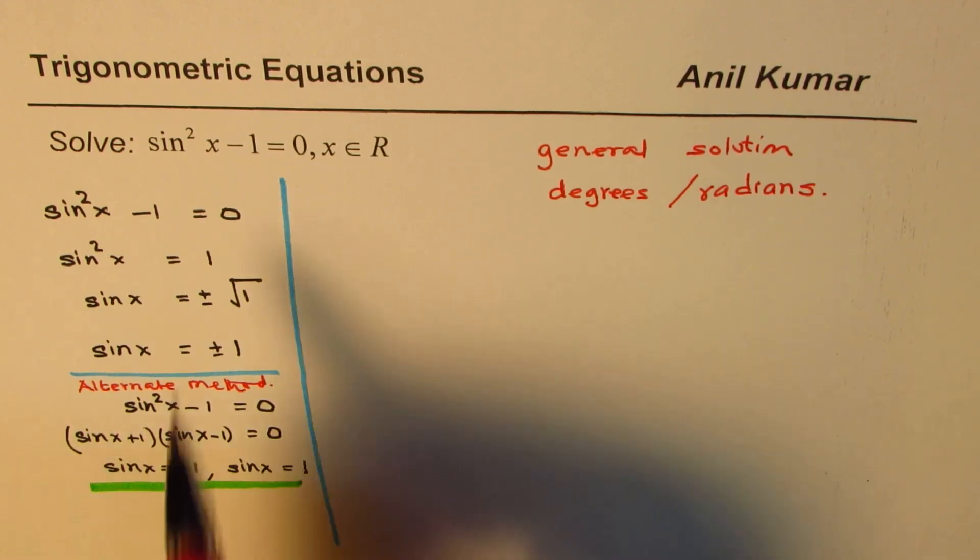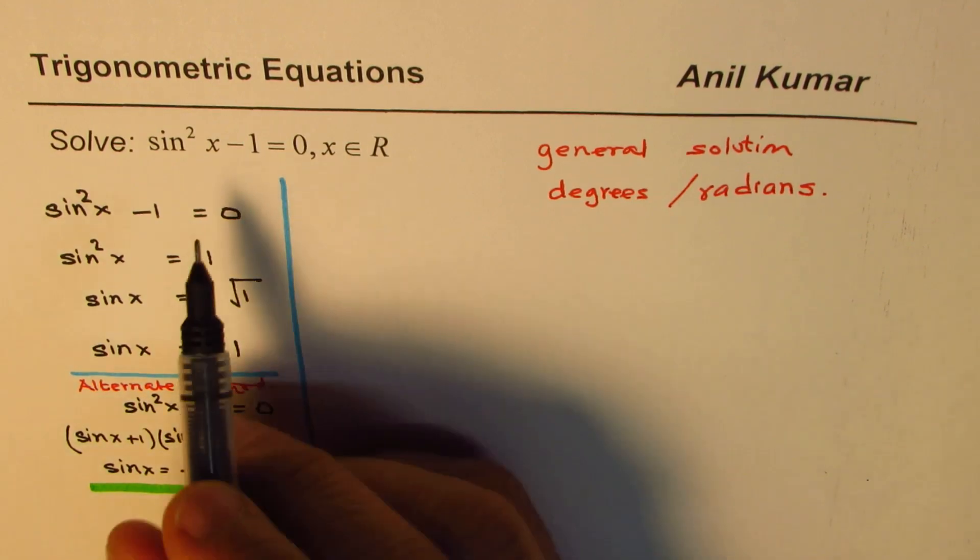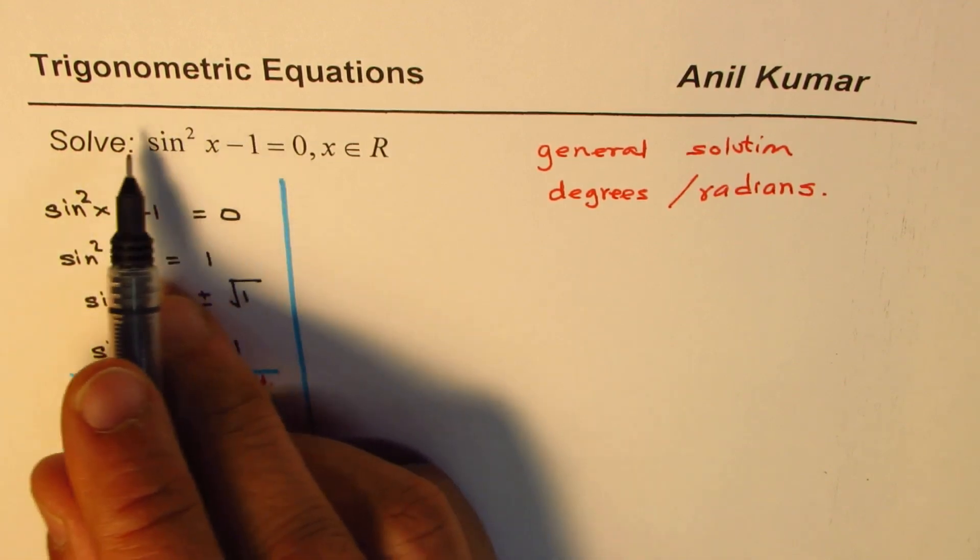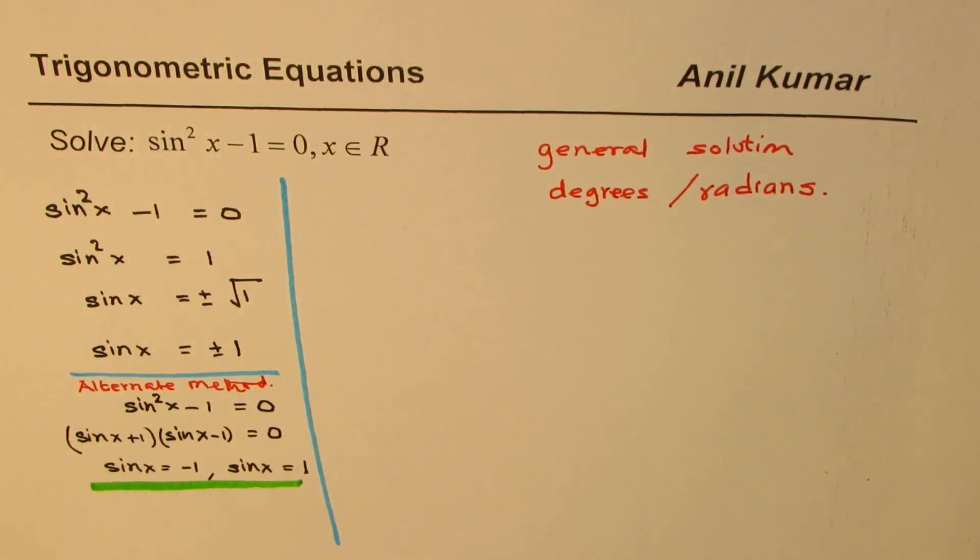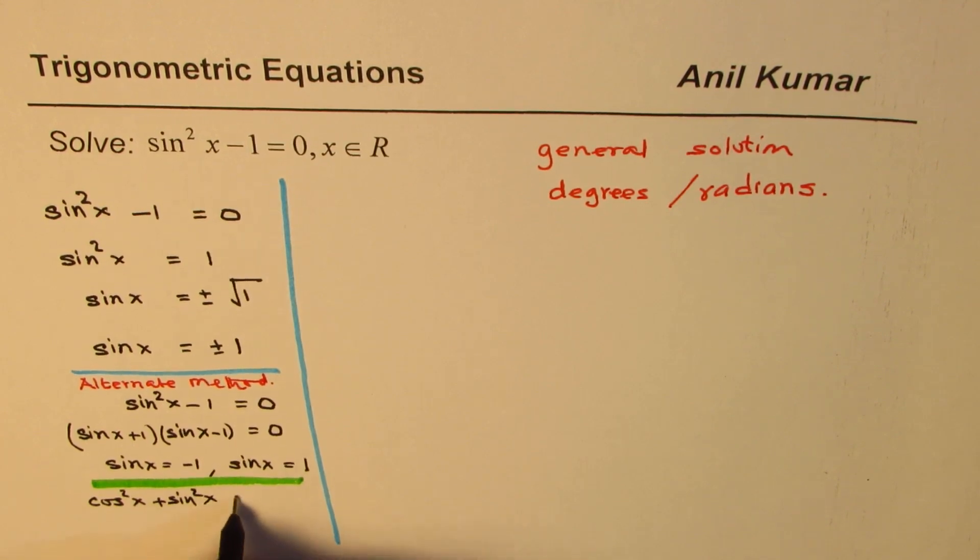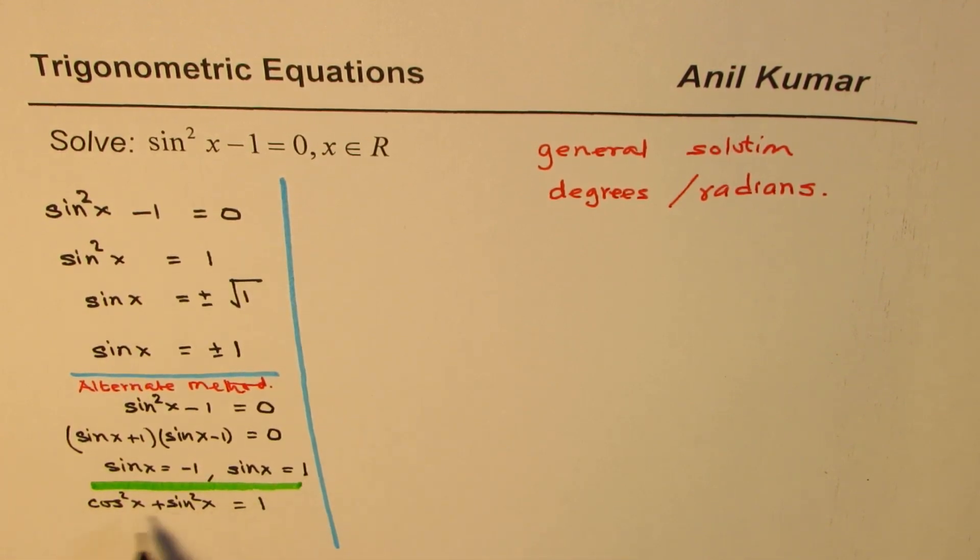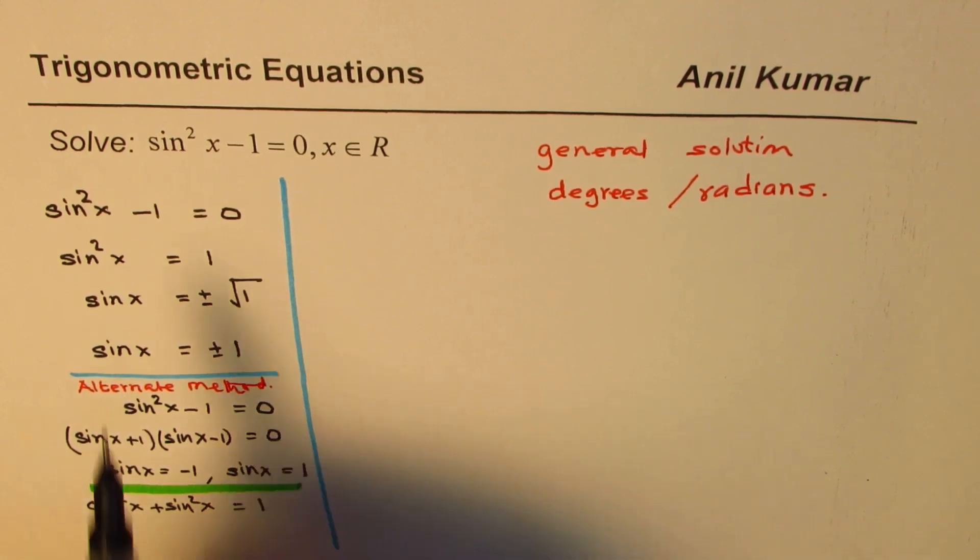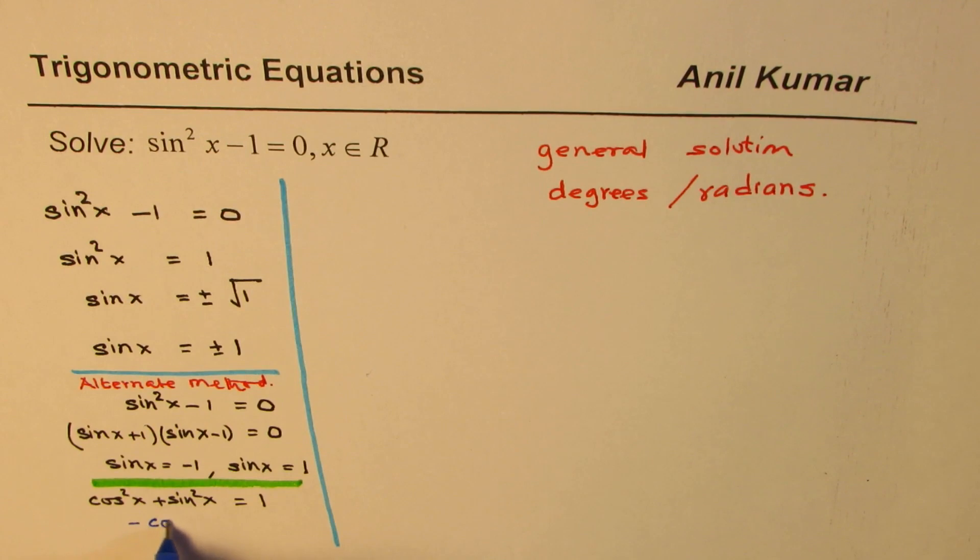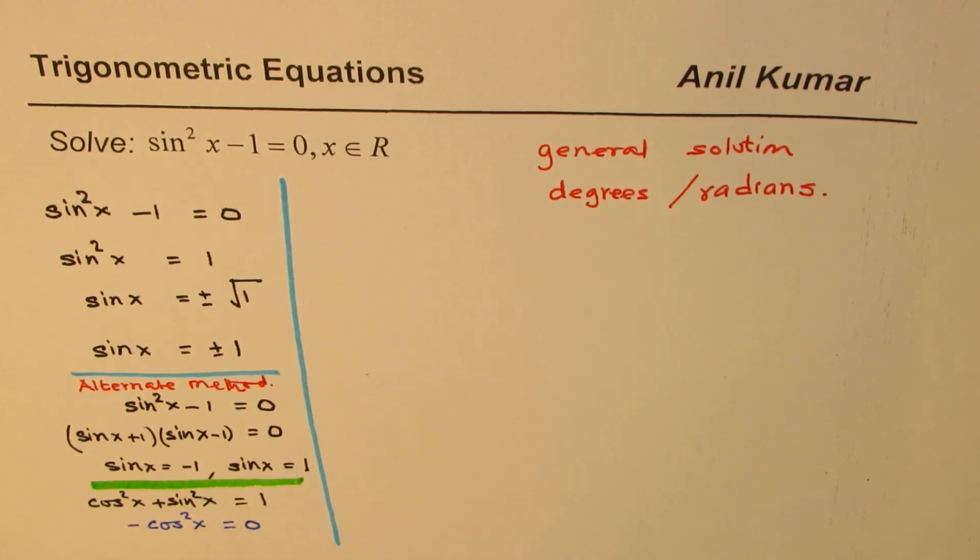You could have written sine square x minus 1 as minus cos square x equals to 0. You could have done that also. Anyway, you could use this identity, which is cos square x plus sine square x equals to 1. So, now here, sine square x minus 1 is cos square x with negative sign. Sine square x minus 1 is minus cos square x. That is to say, you could solve for minus cos square x equals to 0, or cos square x equals to 0.